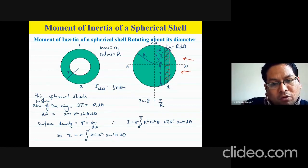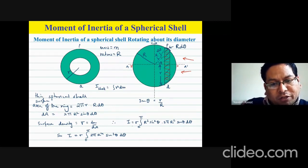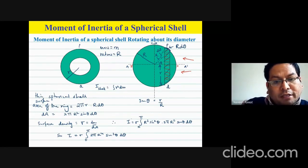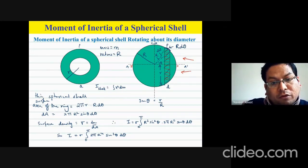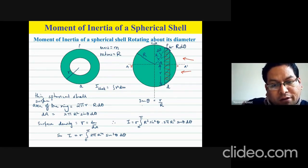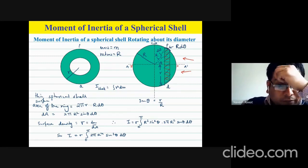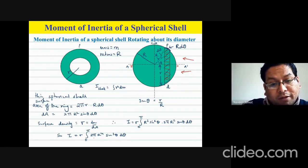For the shell, the moment of inertia is ∫r² dm, where r = R sin θ, giving R² sin²θ. Instead of dm, we have σ dA, where σ is the surface density. dA is 2πR² sin θ dθ. So I = σ × 2πR⁴ ∫sin³θ dθ, with R constant and coming out of the integration.